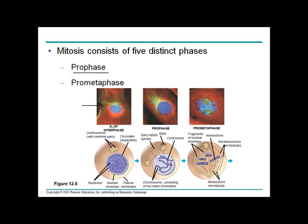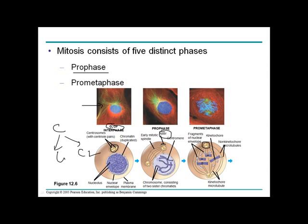Also in prophase, the microtubule organizing center — the centrosome — divides into two. Before cell division there is only one, but in G2 phase it duplicates into centrosome one and centrosome two, as both will be needed for cell division. In prophase, these centrosomes move towards opposite poles of the cell while producing microtubules.